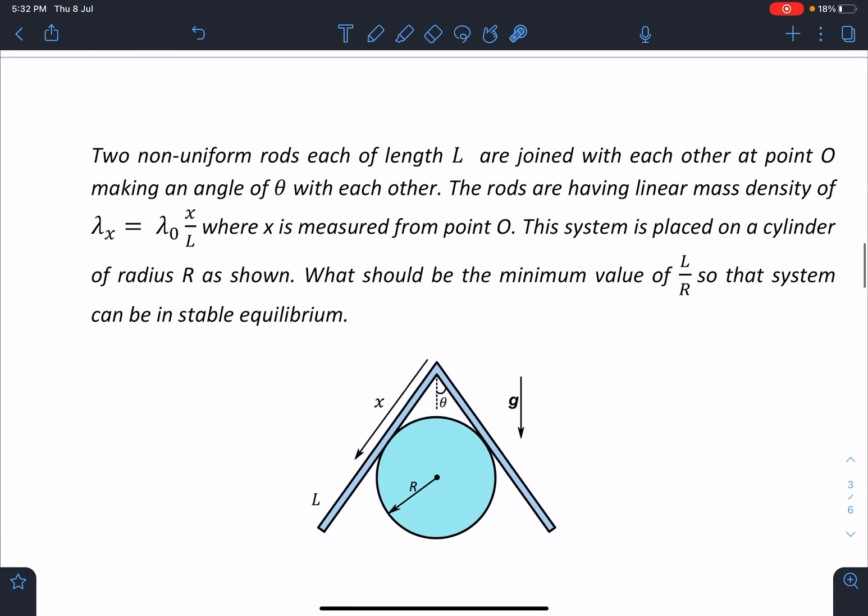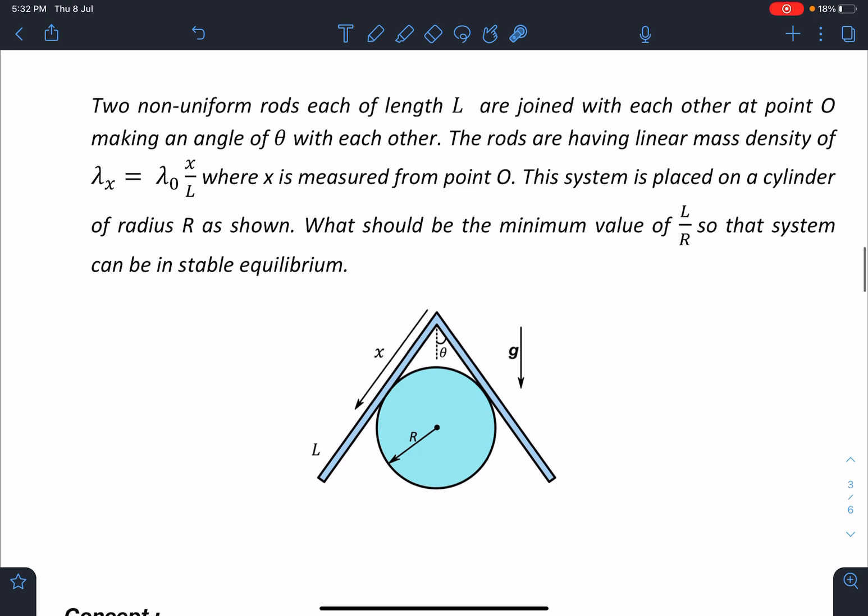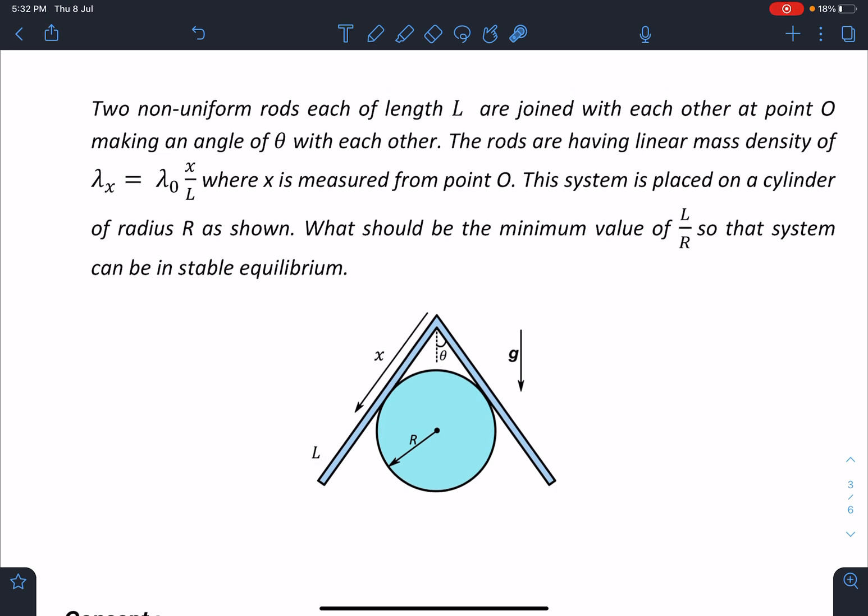Here is the problem statement. Two non-uniform rods each of length L are joined with each other at point O making an angle of theta with each other. This half angle I have taken theta from the language. It is looking like entire angle is theta plus, take care of this.